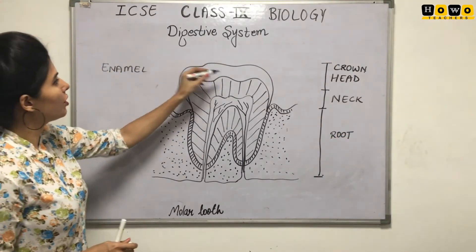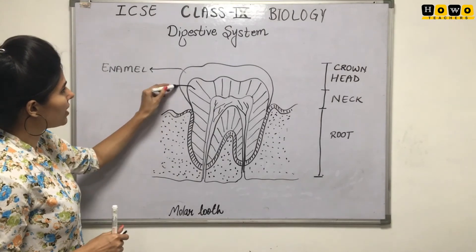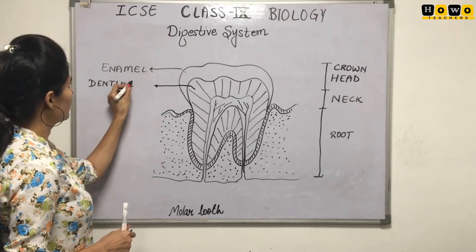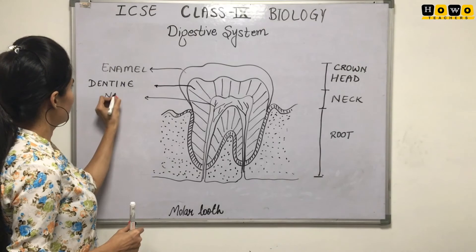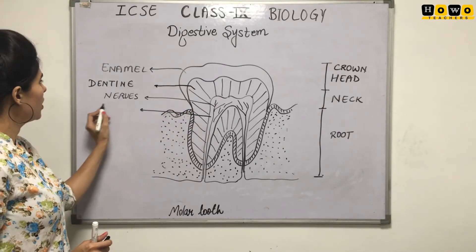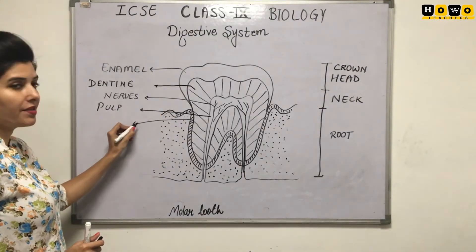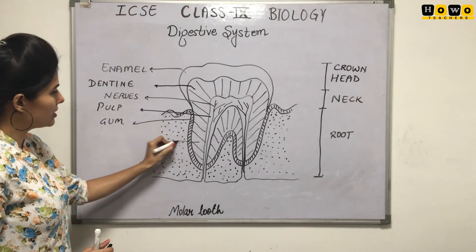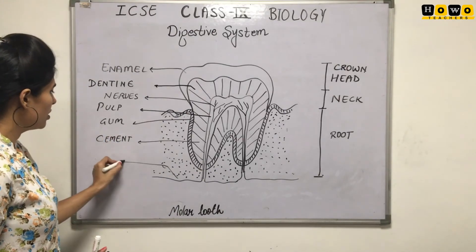This upper wide portion of the tooth is known as enamel. After that, this region is known as dentine. Here these are the nerves. This portion is the pulp or pulp cavity. These lines that we have shown are the gum. This is cement. And here we can say it is the lower jaw.